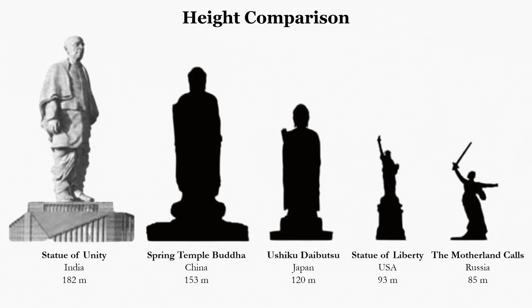The Statue of Unity, the world's tallest statue, which is approximately 182 meters in height, was dedicated to him on 31st October 2018. Now we'll see about the story behind the name, height, and the location of the statue.